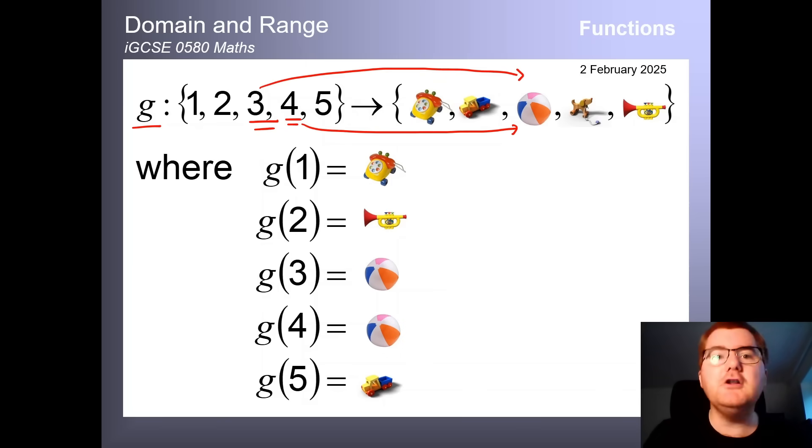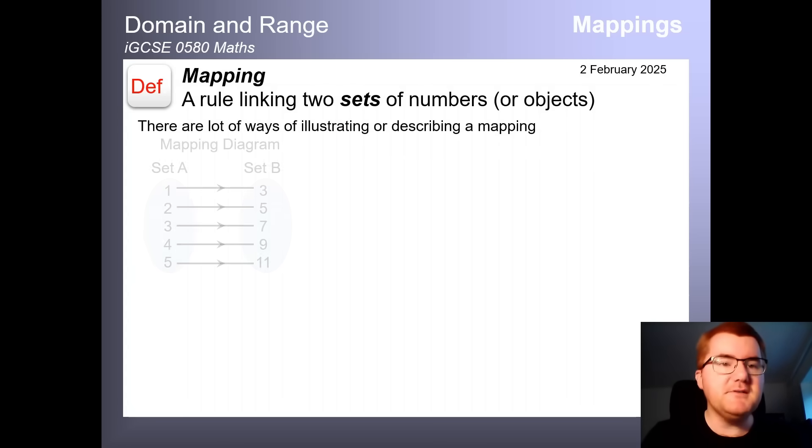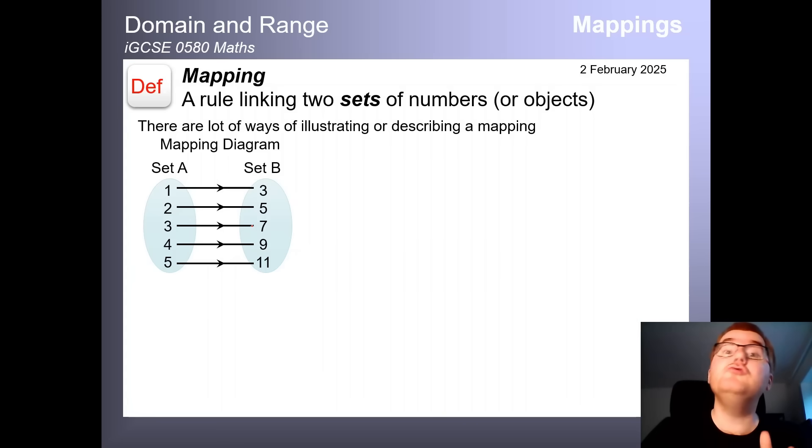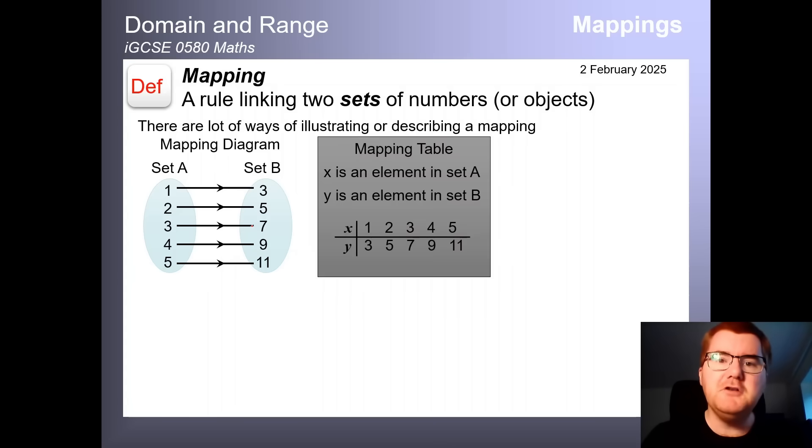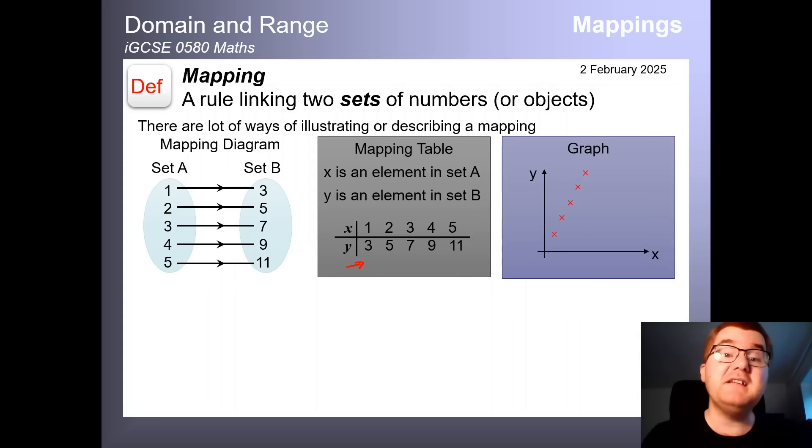Now you've actually seen functions in lots of different ways. A mapping diagram is probably the most common way of actually seeing this. So you can see the mapping here from one to three, two to five, three to seven, and there's some rule in that function machine to actually go from a to b. You've also seen what's called a table of values, or a mapping table. Instead of putting these numbers like this in the diagram, we often put it into a table to give us a table of values. With that table of values, you can actually plot those points and it gives you this straight line graph.